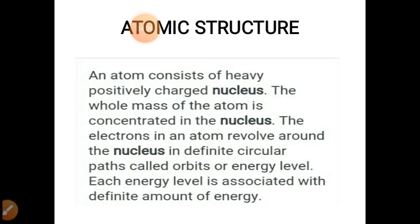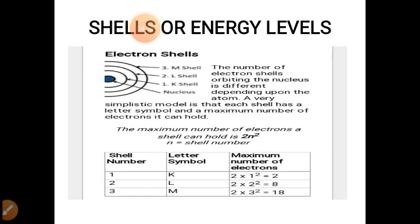Shells or energy levels, electron shells. The number of electron shells orbiting the nucleus is different depending upon the atom. A very simplistic model is shown here. The maximum number of electrons a shell can hold is 2n² where n is the shell number.